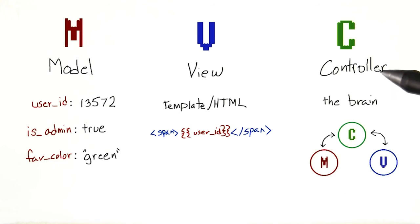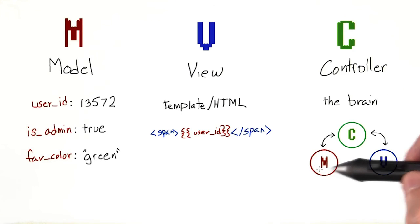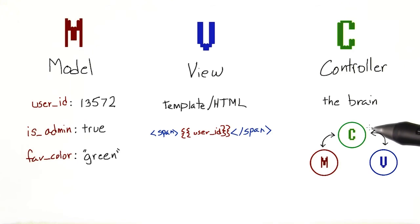Last is the controller. This is the brain of your application. It sits between the model and the view, and is in charge of passing data between them. It contains all the templating logic, routing logic, and anything else that makes your app unique.